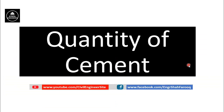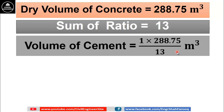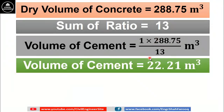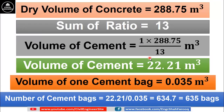Now first we will calculate the quantity of cement required for this PCC work. Dry volume of concrete is 288.75 cubic meters and sum of ratios is 13. Volume of cement equals 1 (ratio of cement) multiplied by 288.75 divided by 13, which gives volume of cement as 22.21 cubic meters. We know that the volume of one cement bag is equal to 0.035 cubic meters. To convert volume of cement into number of bags, divide total volume of cement by volume of one cement bag. We get number of cement bags equal to 634.7, or approximately 635 bags.